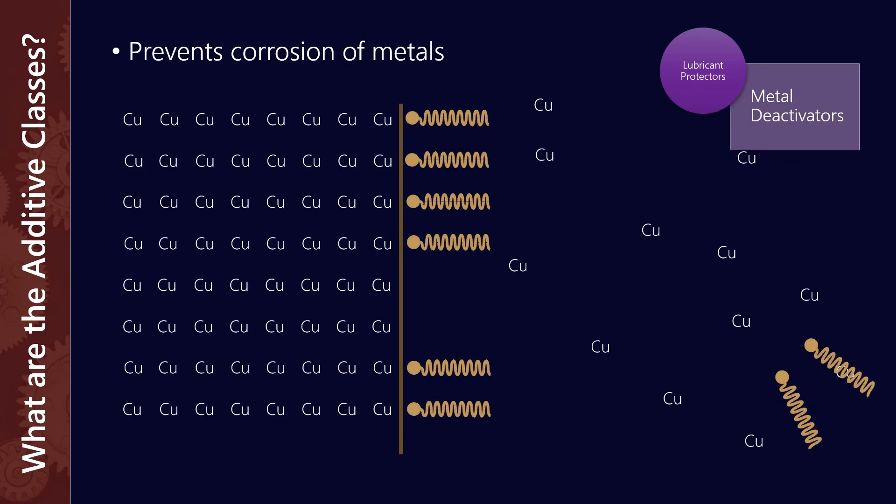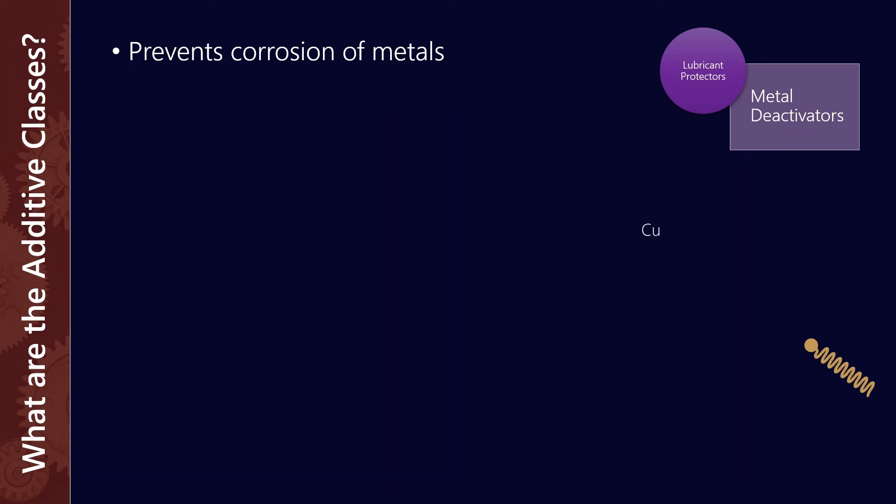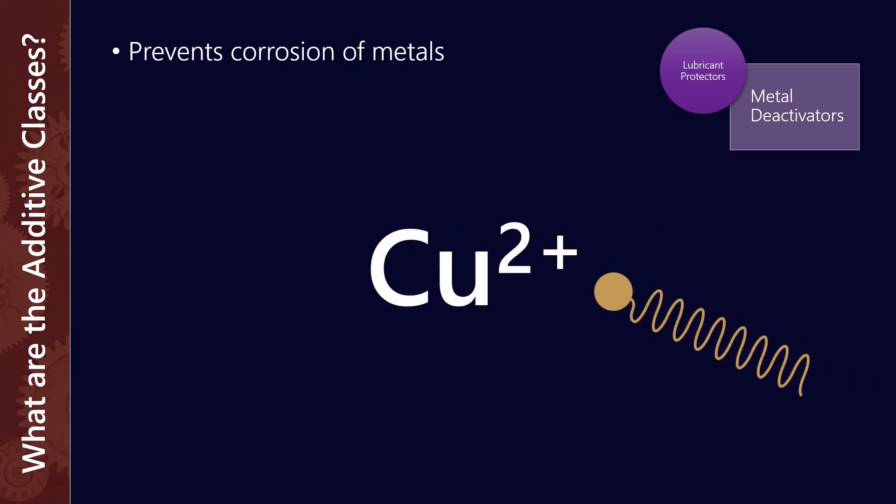Then we've got metal deactivators. Going back to corrosion inhibition, if you've already got copper ions present within the lubricant, these can help neutralize those ions to prevent them being sites for oxidation. Metal ions are oxidation accelerants—they're catalysts for oxidation—and so metal deactivators can help slow down that process.